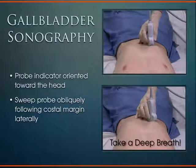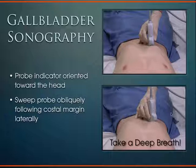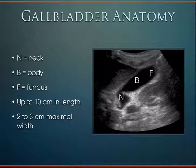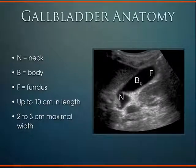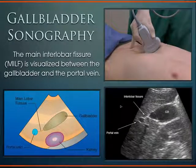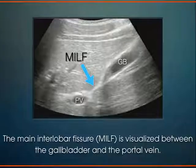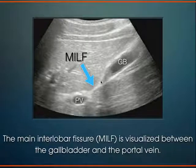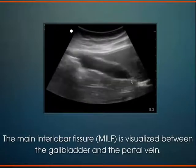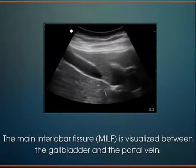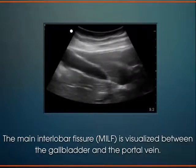A helpful protocol is a clockwise approach: indicator towards patient's left for parasternal long axis, rotate 90 degrees to patient's right for parasternal short axis, slide down for apical four and fifth chamber, then slide clockwise to subcostal. For gallbladder scanning, use a curved or phased array transducer with indicator aimed to the patient's head. Have the patient take a deep breath and slide along the subcostal margin laterally. The gallbladder fundus, body, and neck should appear — up to 10 cm length and 3 cm width is normal. The main interlobar fissure connects the portal vein to the gallbladder neck as a landmark.